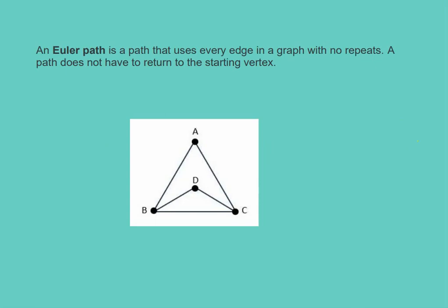Let's define some of the parts of the graph. All of the sides that connect are called edges. We have 1, 2, 3, 4, 5 edges in this diagram. The points that connect the edges are called vertices, or each one is a vertex. They're labeled with letters: vertex A, vertex C, vertex D, and vertex B.